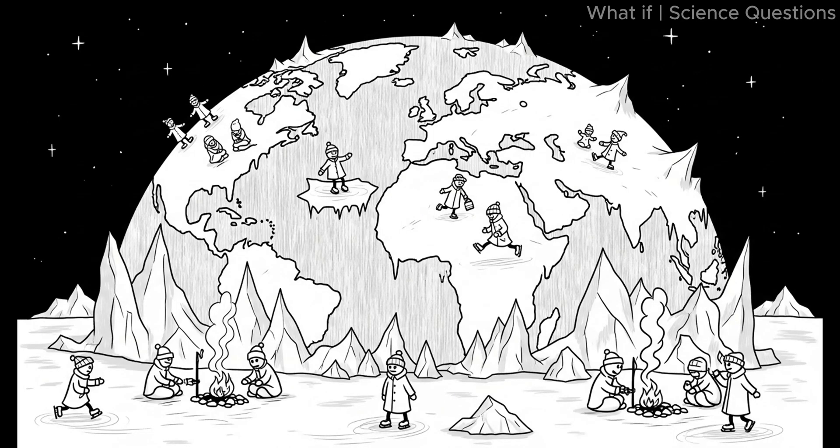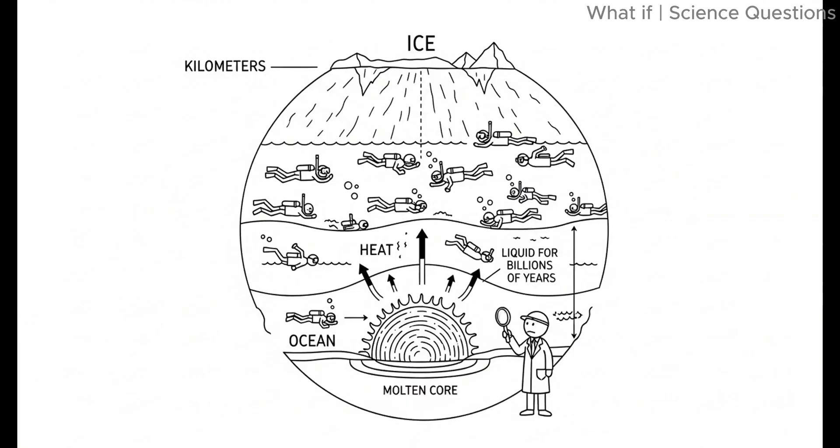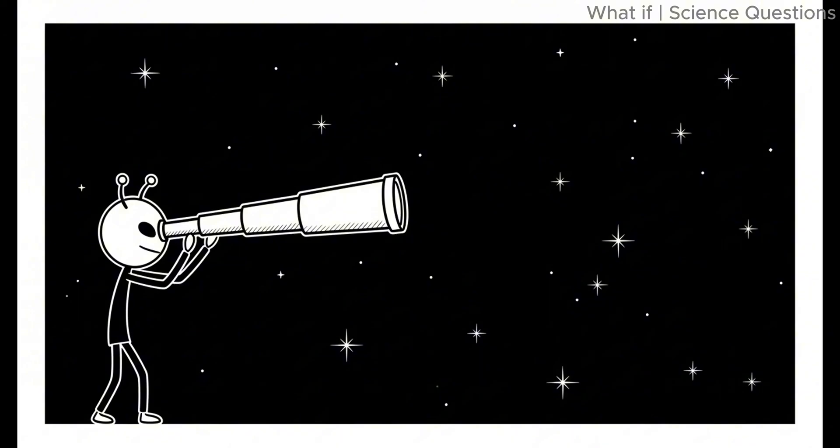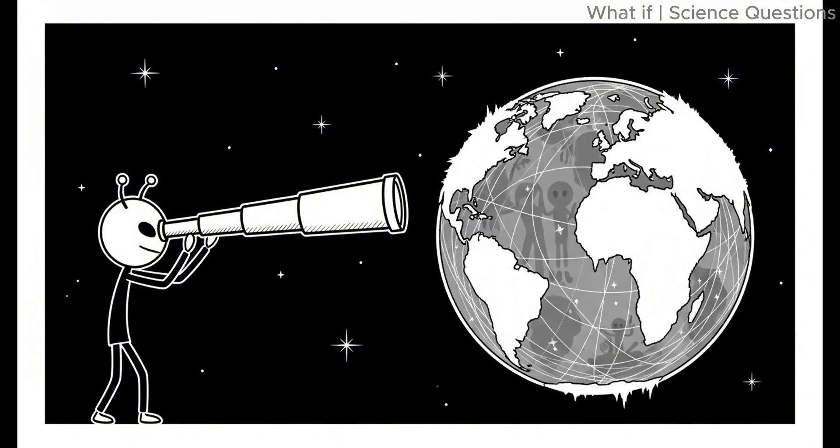But here's the paradox. Life on Earth might not die completely. Beneath kilometers of ice, oceans could remain liquid for billions of years, heated from within by Earth's molten core. In fact, alien astronomers might look at our frozen planet and wonder if it still shelters hidden life.